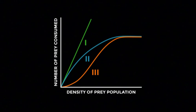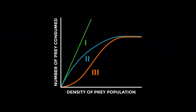Today we'll be discussing functional responses in ecology. Functional responses model the intake rate of a consumer as a function of food density, and are generally divided into three types: type 1, type 2, and type 3.